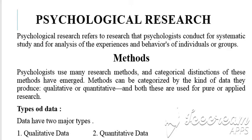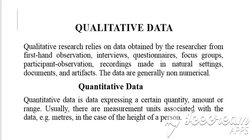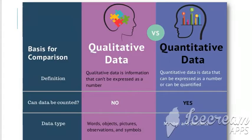When we conduct research, we need results in either qualitative data or quantitative data. When we talk about qualitative data, we always have results in the form of observations, symbols, objects, and words — because the word 'qualitative' refers to quality. When we talk about quantitative data, we always have results in numerical values or single digits.